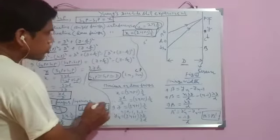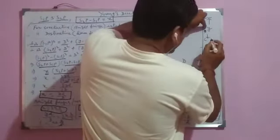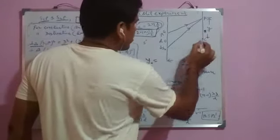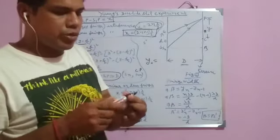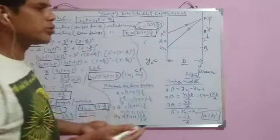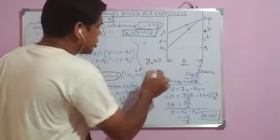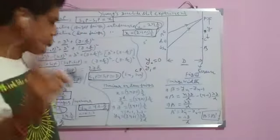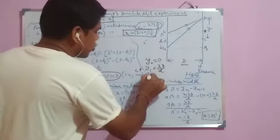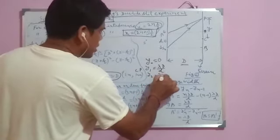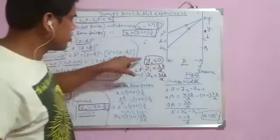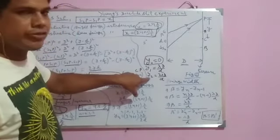If N = 0, then Y₀ = 0, which corresponds to the central bright fringe at point C. Y₁ = λD/d is the first bright fringe, and Y₂ = 2λD/d is the second bright fringe, and so on. All distances are measured from the central bright fringe at C.